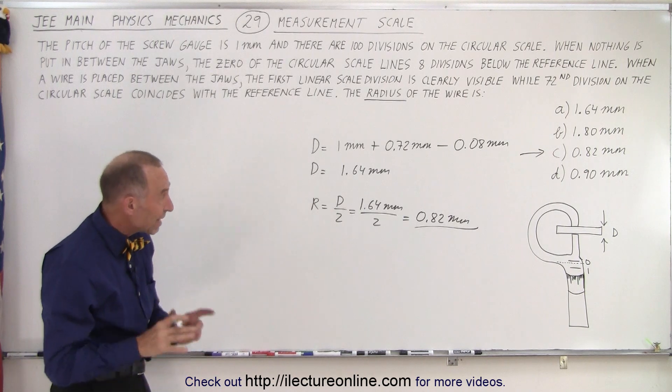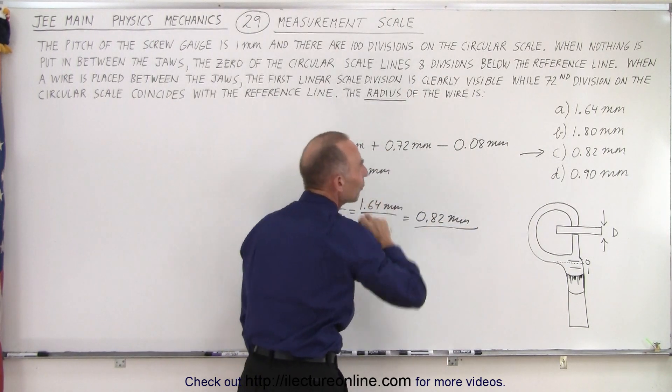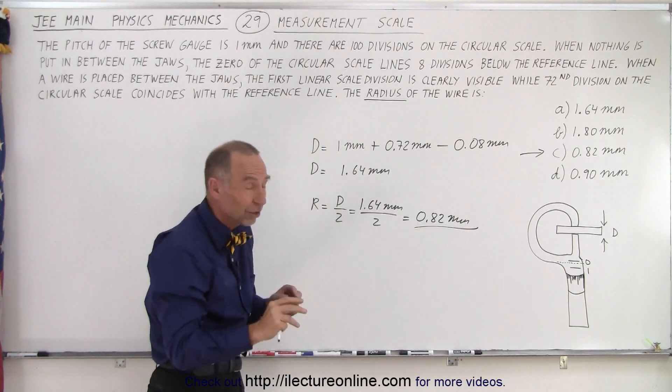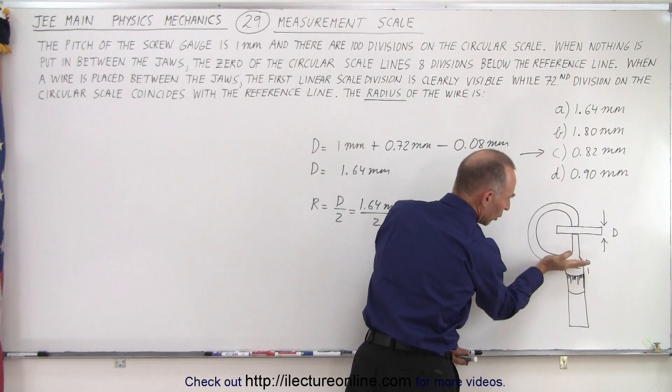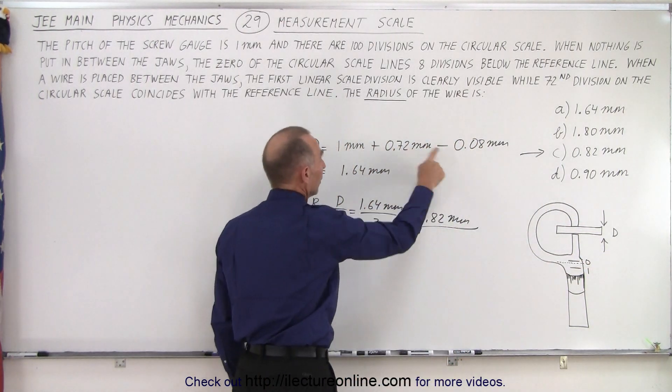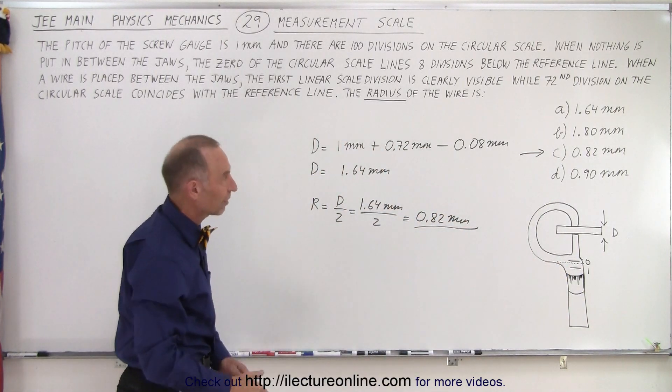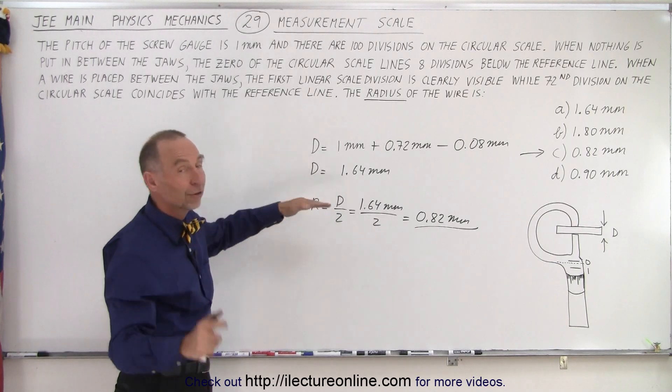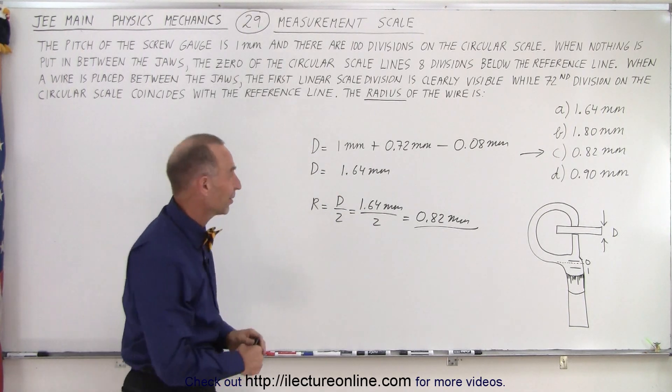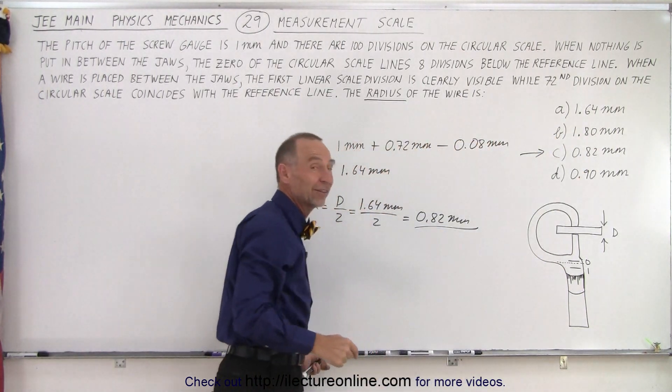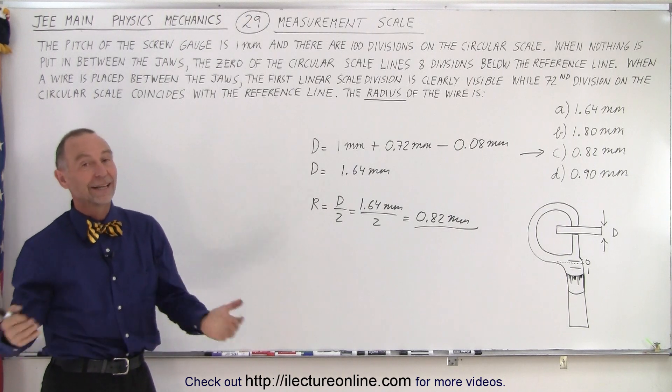So it's a simplistic problem if you realize first of all what they mean by the offset of the zero reading. They did say it's below the reference line, which means that the reference line would be visible, because otherwise the reference line would not be visible if it was in the other direction. Which means that when we close the jaws with nothing in between, we're actually below the zero reading, so we need to subtract that delta like we did here. We have clearly the first line visible as they indicate, so that's one millimeter. And then we have the 72nd division out of 100, so 0.72 millimeters added to that, for a diameter of 1.64 millimeters. But we're not asking for the diameter, they're asking for the radius, so we have to divide by two to get the right answer. Notice they're sneaky because this answer also appears, and if you didn't realize that they're asking for the radius instead of the diameter, you would definitely get the wrong answer.